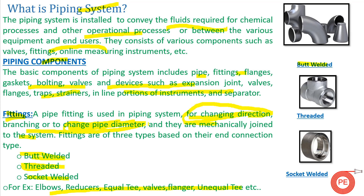For a butt welded fitting, the ends of the fitting are welded to the pipe. For a threaded fitting, threads are cut on both the pipe and the fitting part and they are joined using those threads. For a socket welded fitting, there is a socket inside the fitting and the pipe fits inside up to that socket and is then welded.